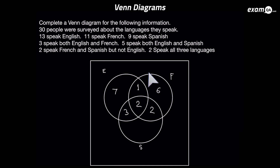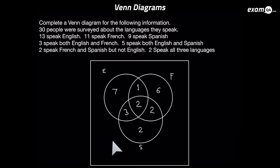Now fill in the last Spanish bit. We know 9 speak Spanish, so the whole Spanish circle should add up to 9. At the moment we've got 3, 2, and 2 there, which is 7. So the last slot must be 2 to make it 9. The only thing missing now is the outside — we know 30 people were interviewed, so do 30 minus every number placed so far, and you should get 7.